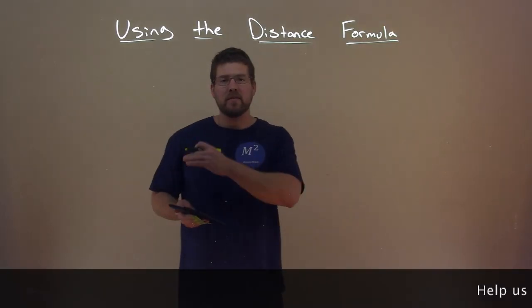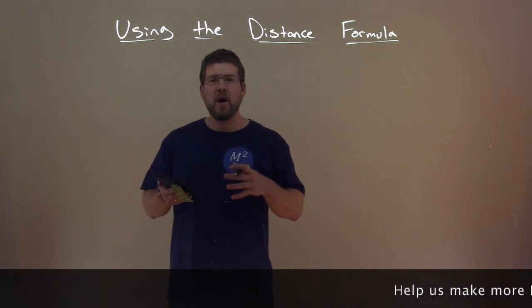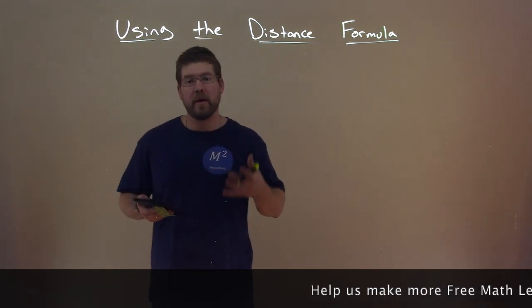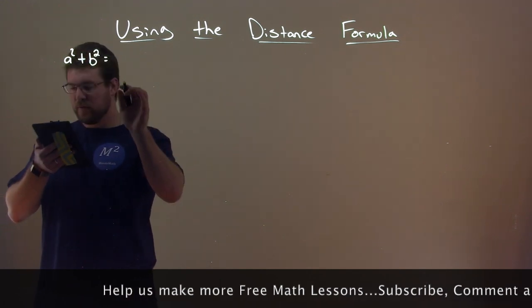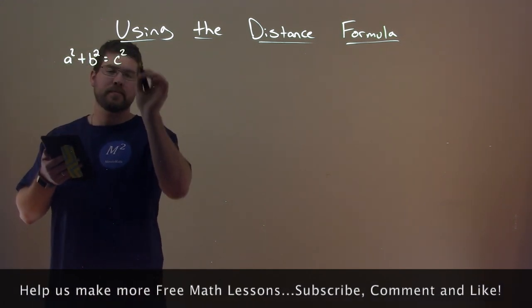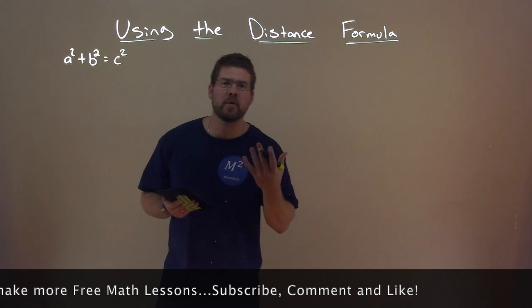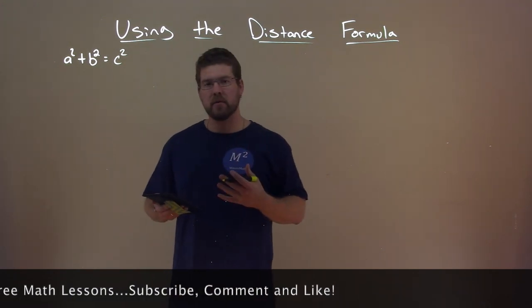So where does the distance formula really come from? Well, we've heard of, hopefully before, the Pythagorean theorem. The a squared plus b squared is equal to good old c squared. And that's our Pythagorean theorem, and it's with right triangles.